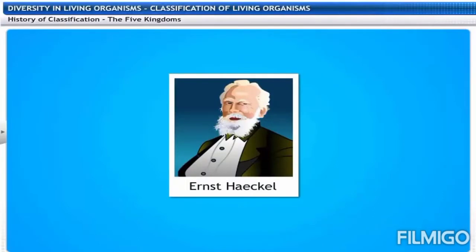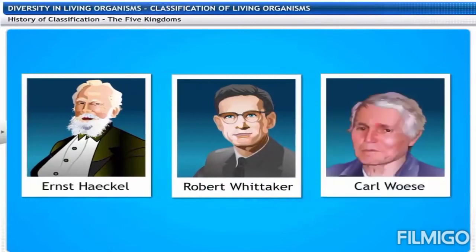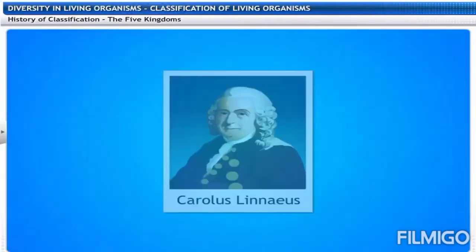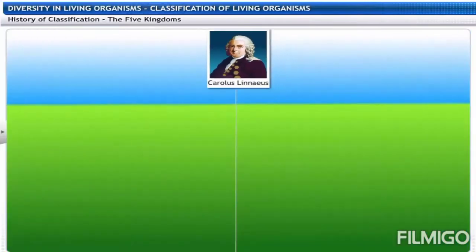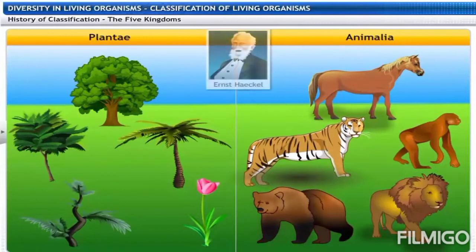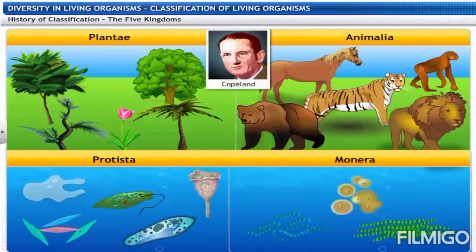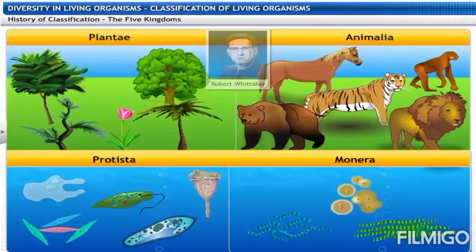Biologists such as Ernst Haeckel, R.H. Whittaker and Copeland tried to classify living organisms into broad categories called kingdoms. Carolus Linnaeus gave the two-kingdom classification, dividing all organisms into Plantae and Animalia. Ernst Haeckel added Protista to include unicellular eukaryotic organisms. Copeland introduced Monera to include all unicellular prokaryotic organisms.